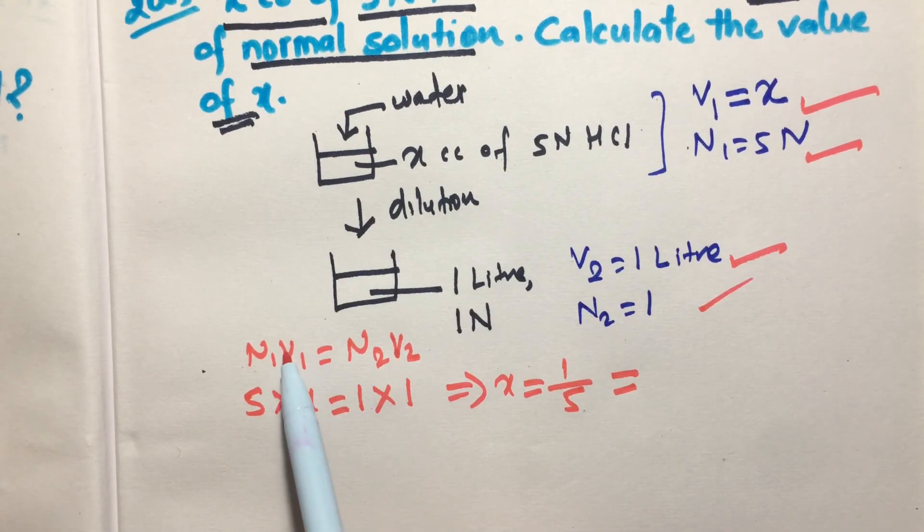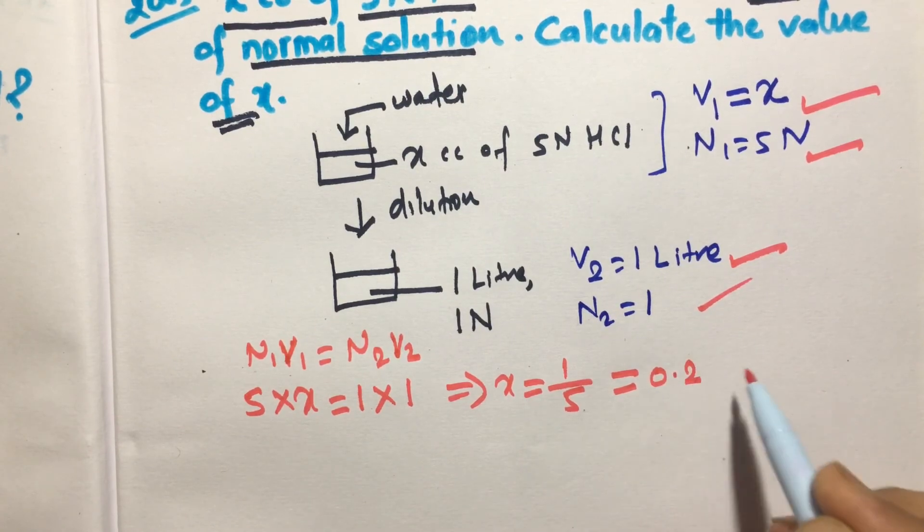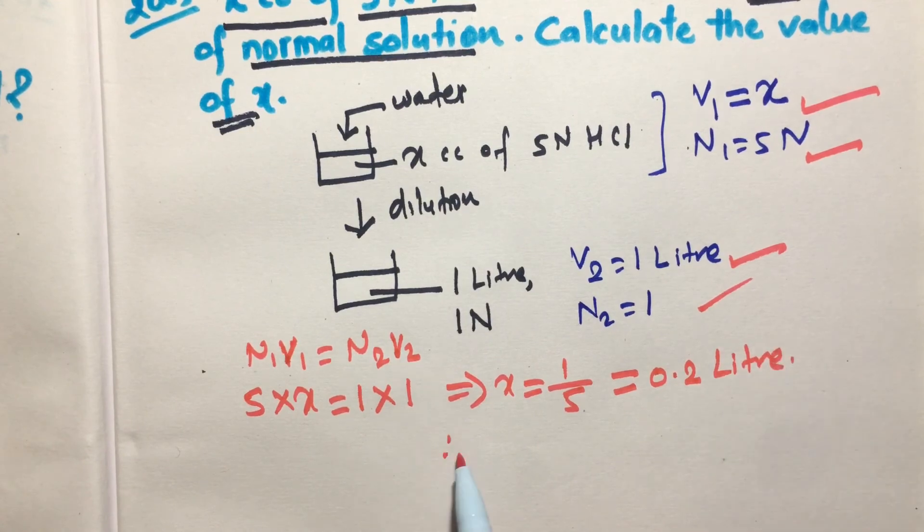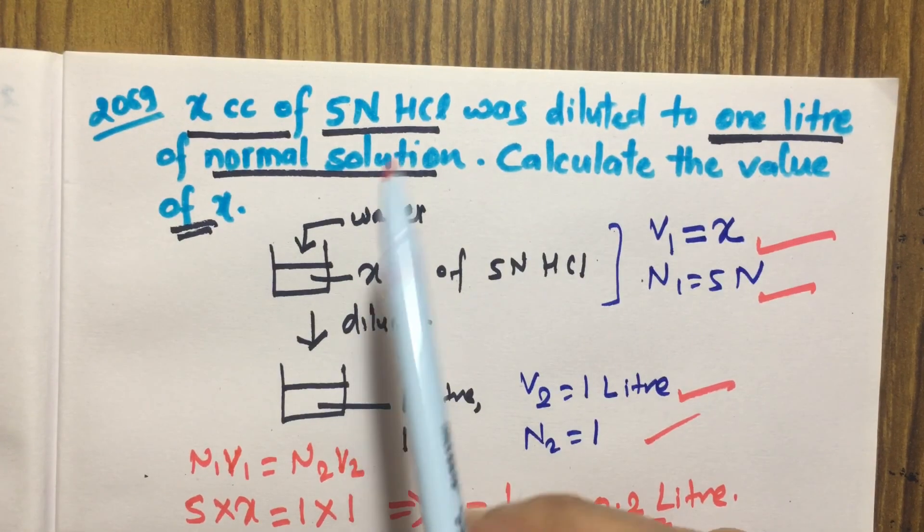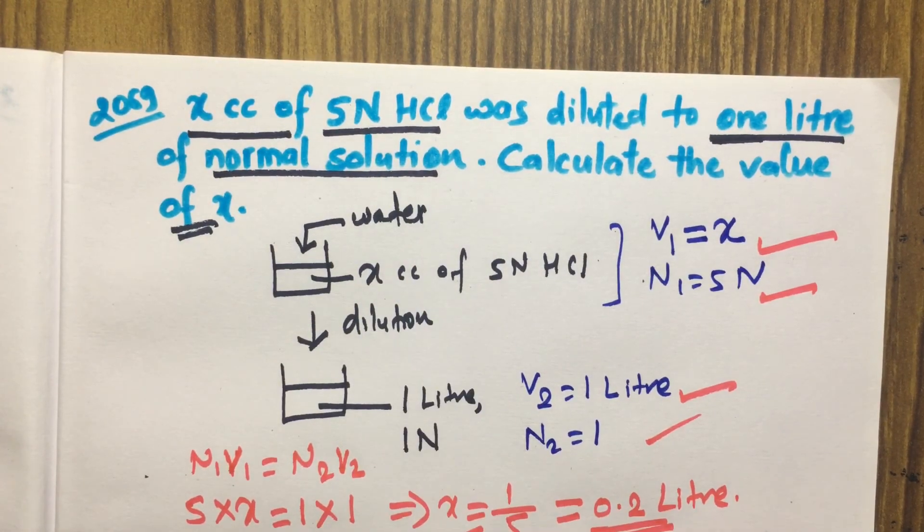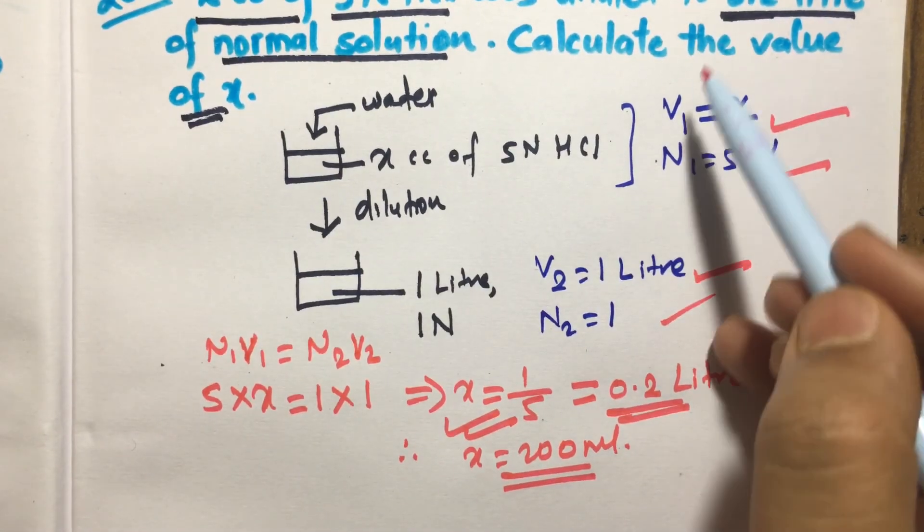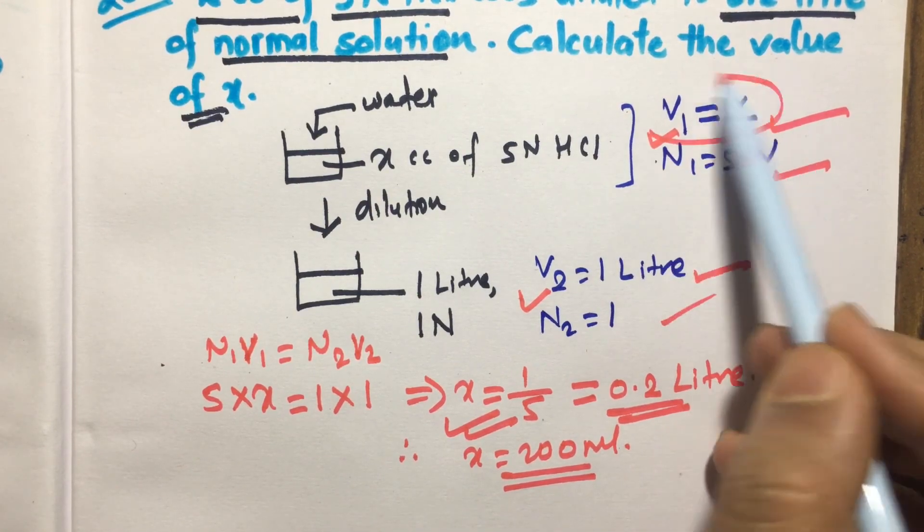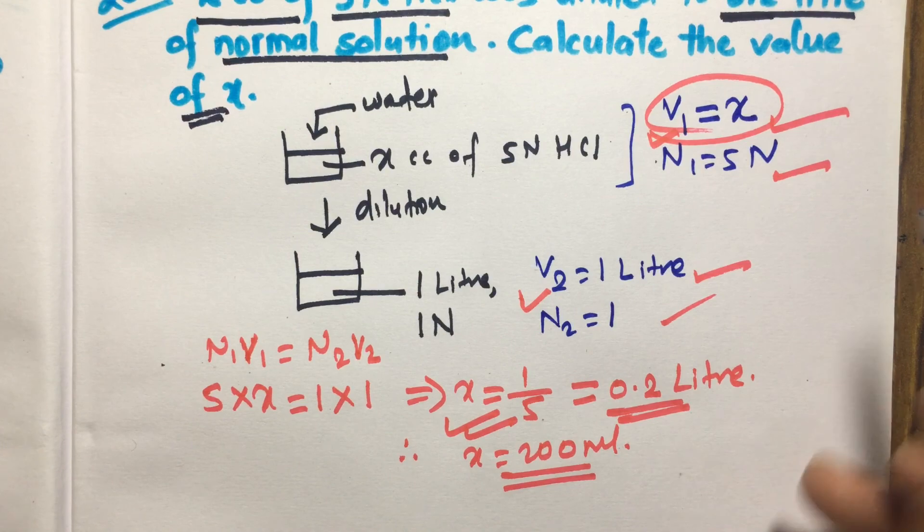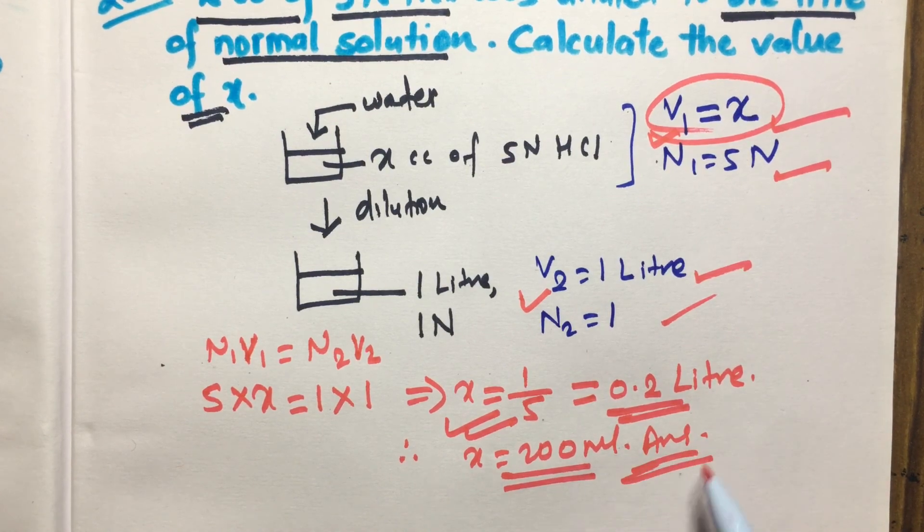Therefore X equals 1 by 5 liter. If V₂ is in liter, it means V₁ is also in liter. V₁ is X, so we get 0.2 liter or 200 ml is the answer. In this question, what volume of water is not asked, so it is not necessary to subtract the value of V₂ and V₁. Only V₁ is asked, so this is the answer.